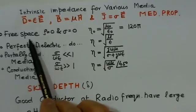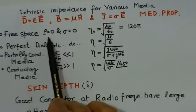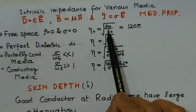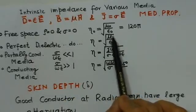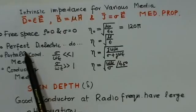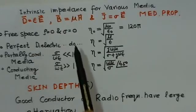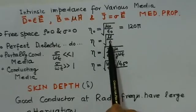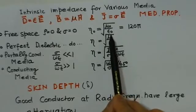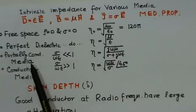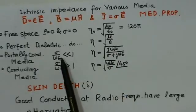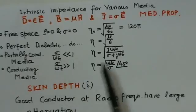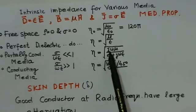In free space, both space charge and conductivity are zero, so we get intrinsic impedance as η = √(μ₀/ε₀) = 120π. For a perfect dielectric, η is given as √(μ/ε). If there is a partially conducting media, σ/(ωε) << 1 and the value for η is √(jωμ/(σ + jωε)).